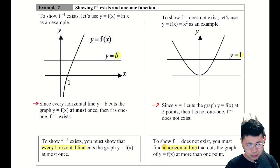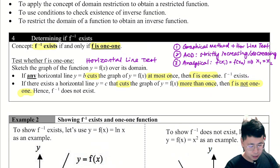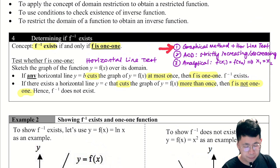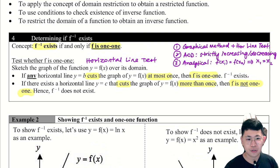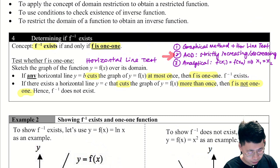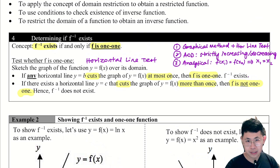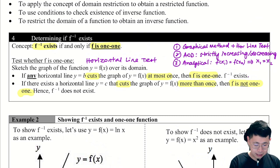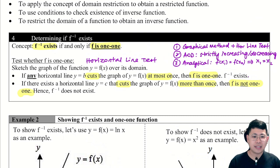Now, there is more than one method to show f inverse exists or that f is one-to-one. We've been relying on the graphical method with the horizontal line test. There is also the application of differentiation — showing the function is strictly increasing or strictly decreasing. There is also an analytical method, though we don't normally encounter that. Most of the time we rely on the graphical method.